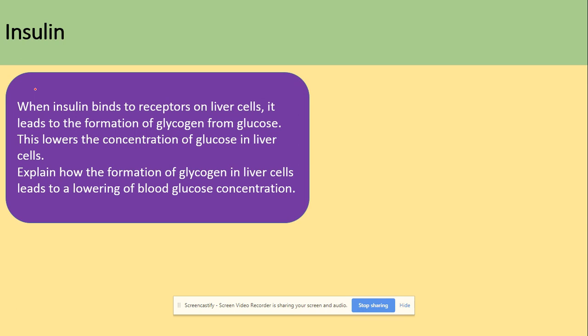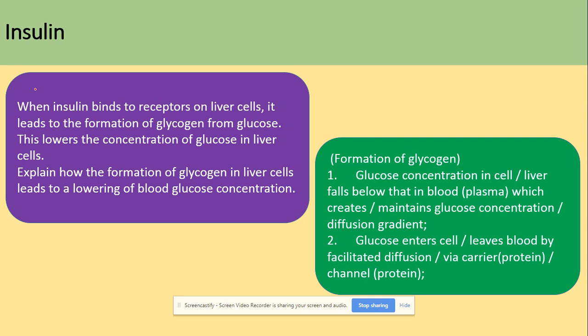When insulin binds to receptors on the liver cells, it leads to the formation of glycogen from glucose. This lowers the concentration of glucose in liver cells. The formation of glycogen in liver cells lowers blood glucose concentration because glucose concentration in the liver cells falls below that in the blood plasma, so glucose leaves the blood and enters the cells by facilitated diffusion through carrier or channel proteins.